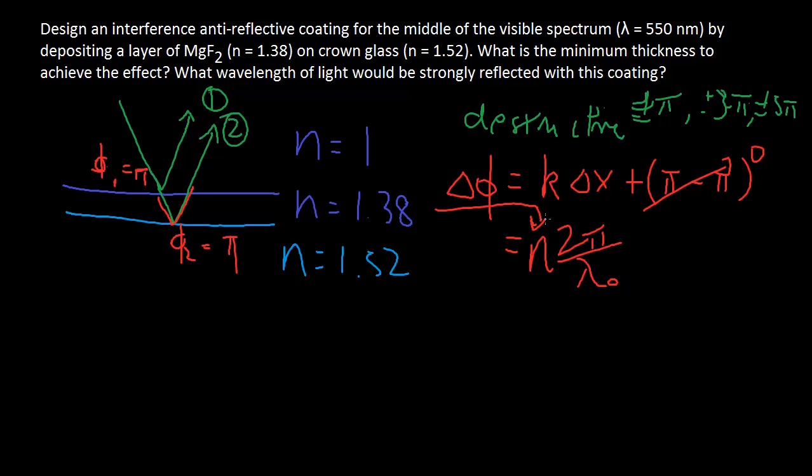And Δx is going to be 2 times the thickness, which is what we're looking for. So, the minimum we can get for destructive is then, we'll put in π over here, that's as small as we can get, not 3π, not 5π. Negative π wouldn't work, so it has to be π.